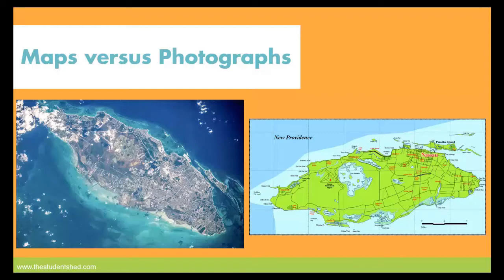So how are they similar? When we look at both of these maps, we see that both maps are orientated in a very similar fashion where Paradise Island is located in somewhat of a northern or northeastern location. Another similarity is that both maps are showing the entire island — not just a section — and they're roughly about the same size.